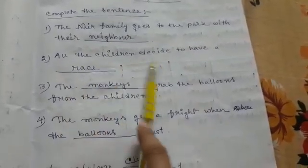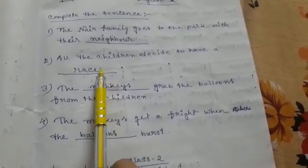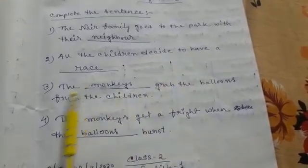Number 2. All the children decide to have a dash. The answer is race. The children decided to have a race.